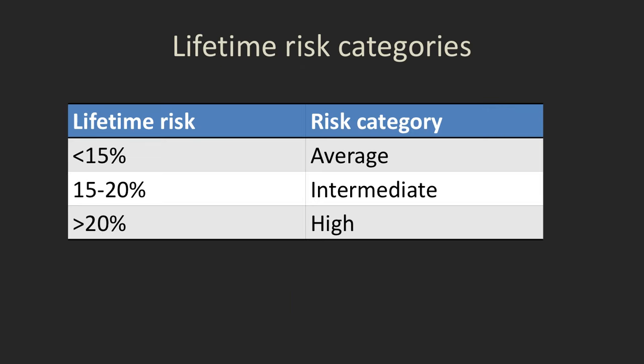Lifetime risk categories are usually split into three levels: the average woman has less than 15 percent risk of developing breast cancer during her lifetime; 15 to 20 percent is considered intermediate risk; and greater than 20 percent is high risk. It's that high-risk group in particular where we have to really think about using additional screening modalities.